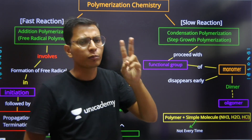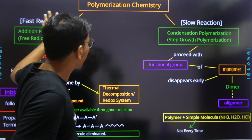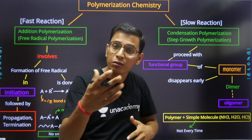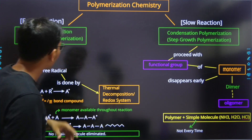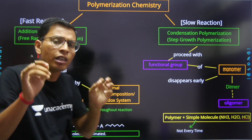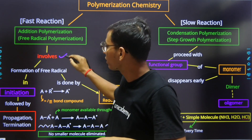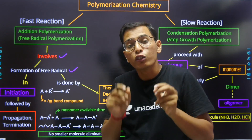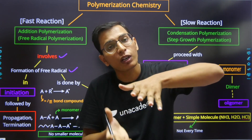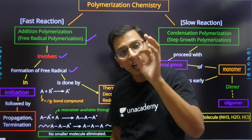We have heard these two basic names: addition polymerization and condensation polymerization. Maximum GATE exam questions come from these. Addition type polymerization basically starts with the formation of free radicals. Because of the involvement of free radicals, this is why it is called free radical polymerization.